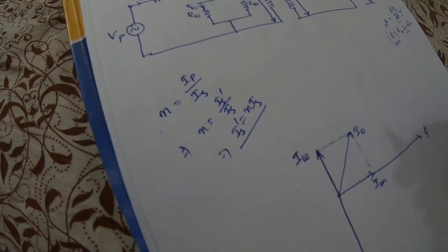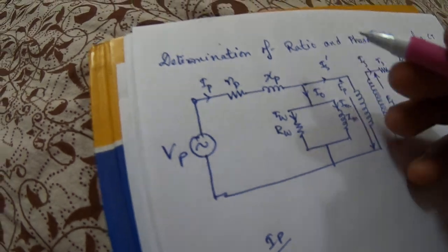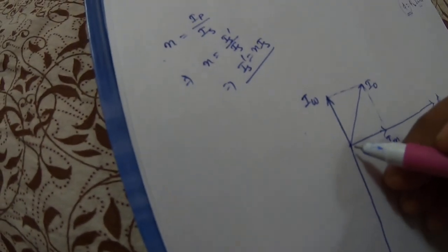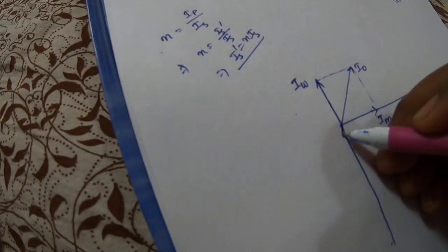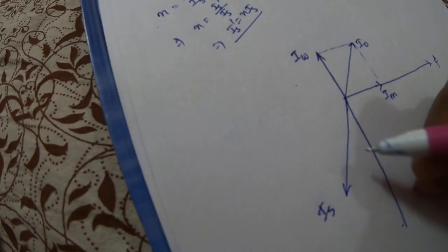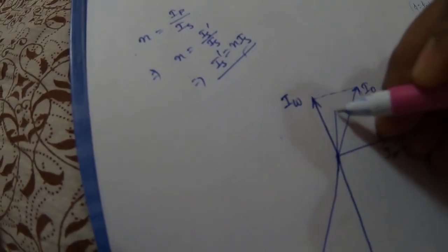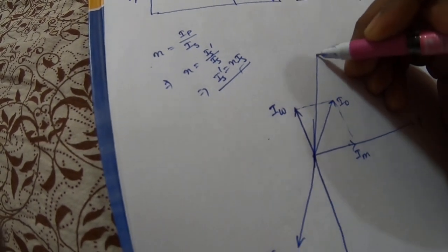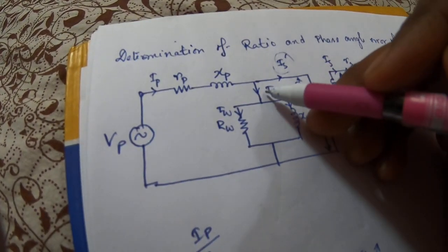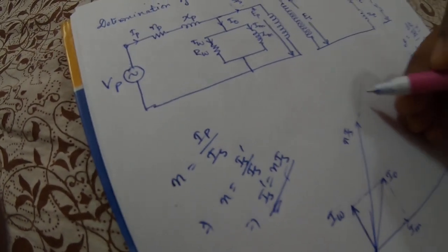To find the value of Ip, Ip is the phasor sum of I0 and Is_dash, where Is_dash is the counter-balancing current. Let us plot Is; just reverse to Is, we get n times Is, which equals Is_dash. So reversing Is gives us the same line, and that is your n times Is, which equals Is_dash.